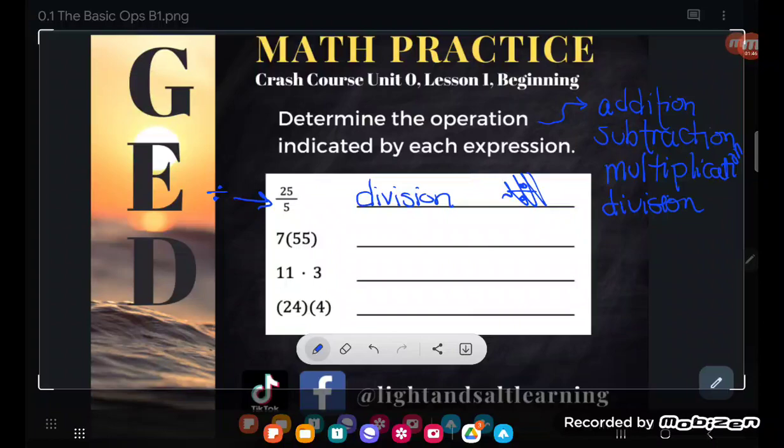You see a 7 shoved up against a 55 with nothing between them except parentheses, and that is telling you that you are multiplying. This 7 parentheses, 55 parentheses, the proximity of those two things, the nearness, with the only thing between them a parentheses, tells us that we are multiplying. This is a multiplication.